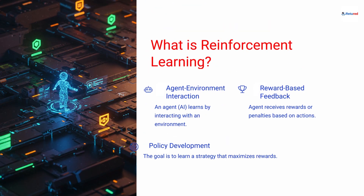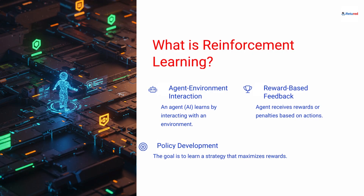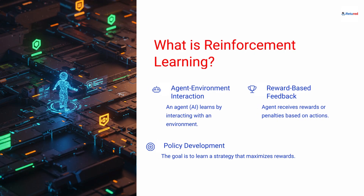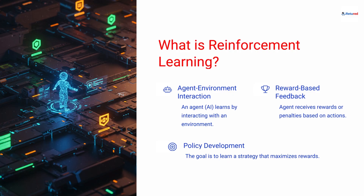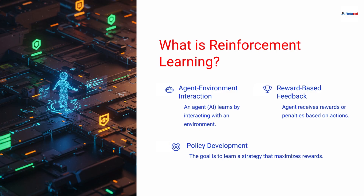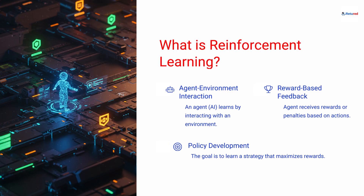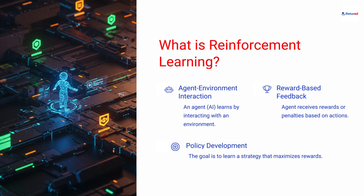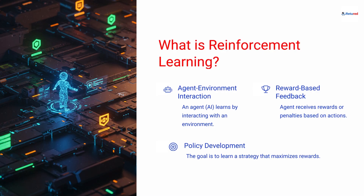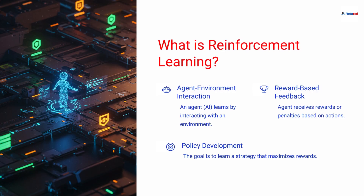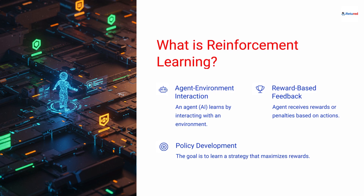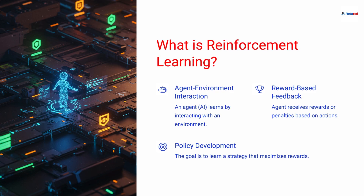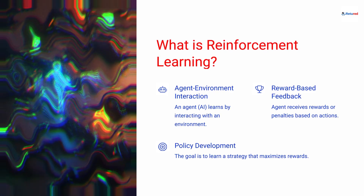Reinforcement learning is a distinct paradigm from supervised or unsupervised learning. Here, an agent learns by interacting with an environment, receiving feedback in the form of rewards or penalties. Unlike having a predefined right answer, the agent discovers its best strategy over time by maximizing cumulative reward.